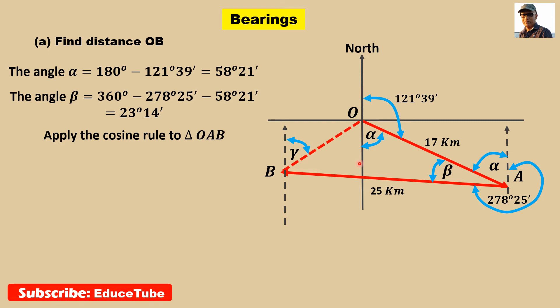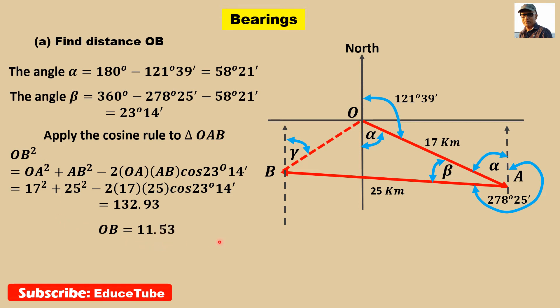Now we will apply the cosine rule for triangle OAB. The formula is OB squared equals OA squared plus AB squared minus 2·OA·AB·cos(beta) in between these two lines. Beta is 23 degrees 14 minutes. Using calculator, we get this distance for OB squared. Taking the square root, we get OB equal to 11.53. So this ship from the starting position is 11.53 kilometers far.